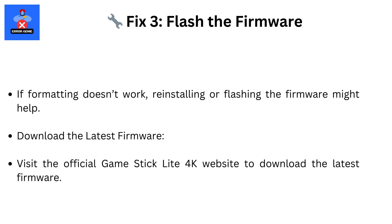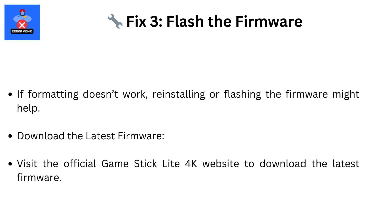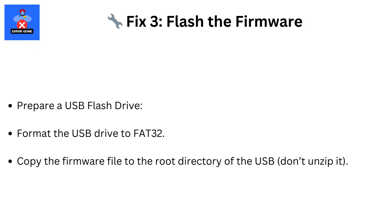Fix 3: Flash the firmware. If formatting doesn't work, reinstalling or flashing the firmware might help. Visit the official GameStick Lite 4K website to download the latest firmware. Format a USB flash drive to FAT32 and copy the firmware file to the root directory of the USB — do not unzip it. Insert the USB drive into the GameStick and follow the on-screen instructions to update the firmware. Note: do not turn off the device or remove the USB during the update process.